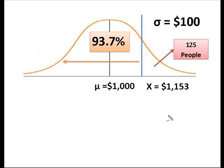Alright, so here we are with our problem set up graphically. What the problem told us was that 93.7% of the employees made less than $1,153 a week. We were given the standard deviation, we were given the mean, we were told that 125 people make more than that $1,153 a week. So what I need to do is isolate or determine the percentage of data that exists in the tail of the curve.